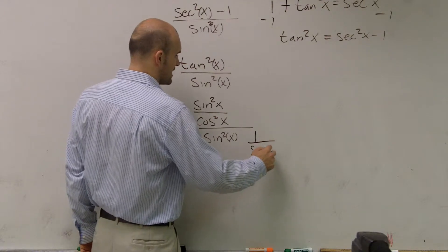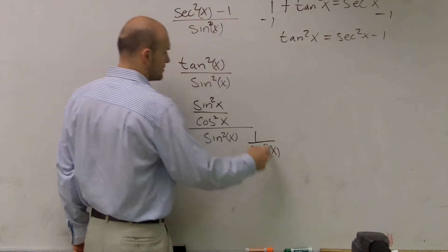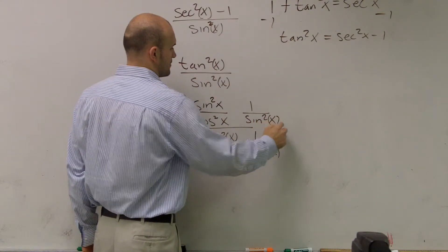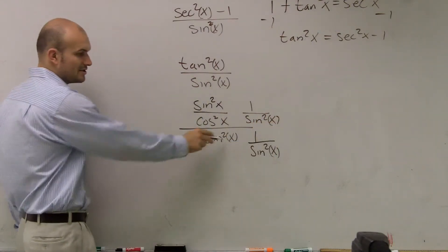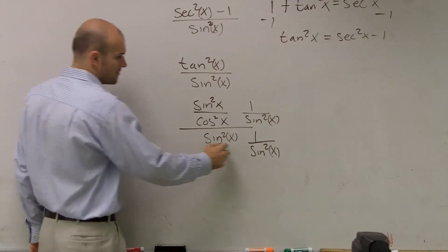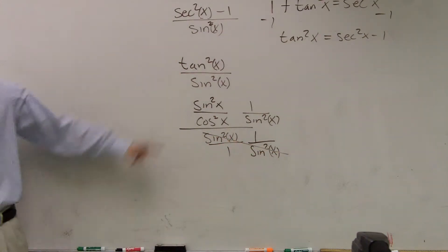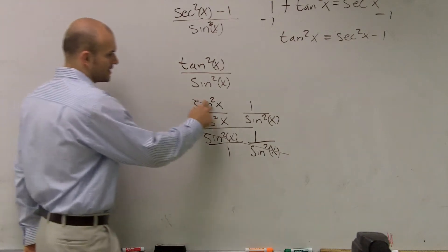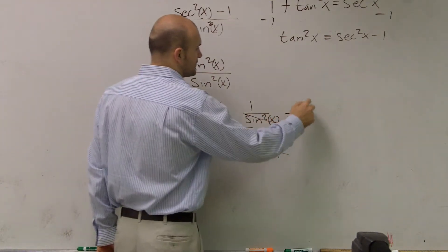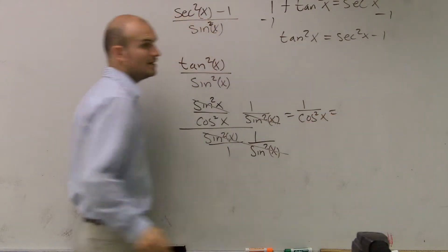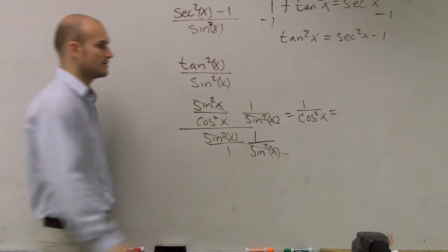So 1 minus sine squared of x. The reason why I do that is to get that off as your bottom. So now that cancels out. And then what's going to cancel out over here? And these two are going to cancel out. So you're just left with 1 over cosine squared of x, which equals secant squared of x.